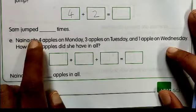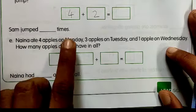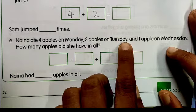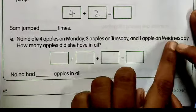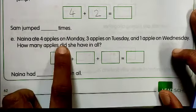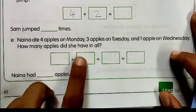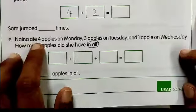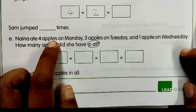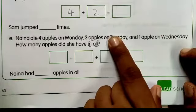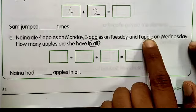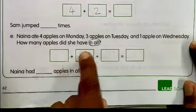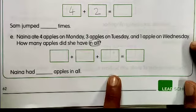Nena ate 4 apples on Monday, 3 apples on Tuesday, and 1 apple on Wednesday. How many apples did she have in all? 'In all' is the addition word. Nena ne Monday ko 4 apples khaye, Tuesday ko 3 apples khaye, aur Wednesday ko 1 apple khaya. Toh usne total kitne apples khaye? Aapko yahan in sab ka addition karke answer likhna hai.